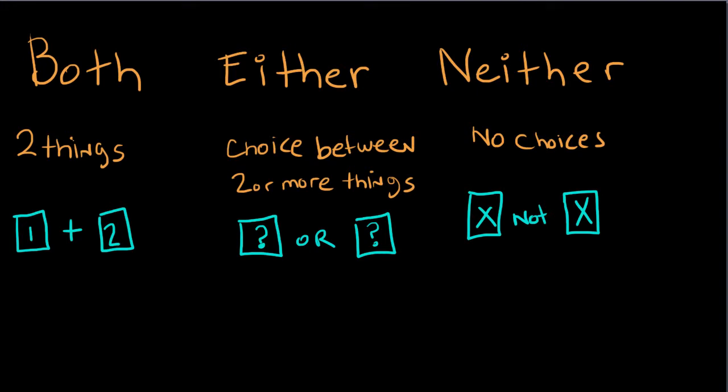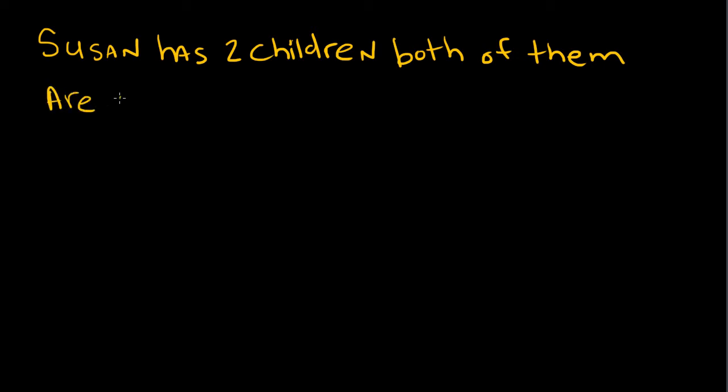So let's look at how we can use both in a sentence. For example, we can say, Susan has two children. Both of them, the two children, are in the university. So I mean, Susan has two children, and both of them means one plus one, two of them, are in the university.